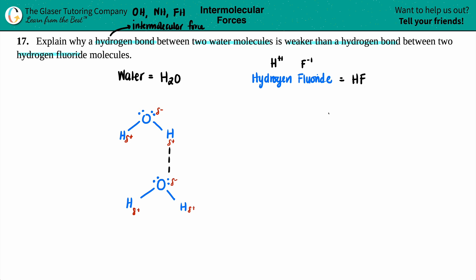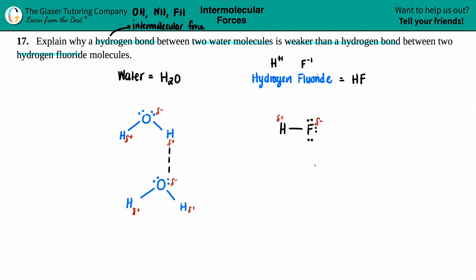Now let's do the same for HF. We have H with a single bond to F, and fluorine has three lone pairs around it. Fluorine is the most electronegative element on the periodic table, so fluorine is the partial negative and hydrogen is the partial positive. Drawing two hydrogen fluoride molecules making a hydrogen bond: the partial negative fluorine connects via a dotted line to the partial positive H of the other HF molecule. And there is your hydrogen bond.